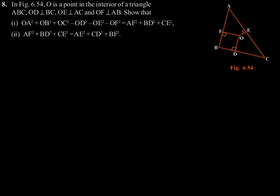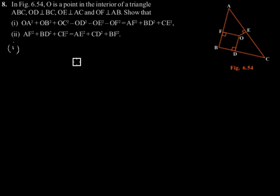Exercise 6.5, question number 8. In figure 6.54, O is a point in the interior of triangle ABC. OD is perpendicular to BC, OE is perpendicular to AC, and OF is perpendicular to AB. Show that: Part 1 — OA² + OB² + OC² − OD² − OE² − OF² = AF² + BD² + CE². Before solving the first part, let's join OA, OB, and OC.